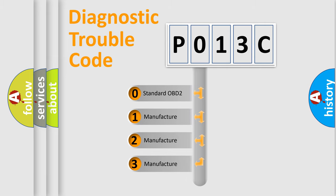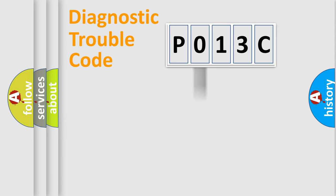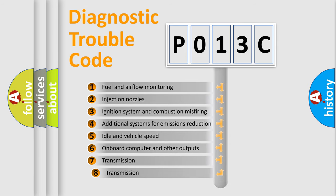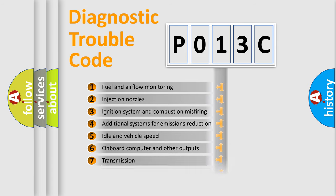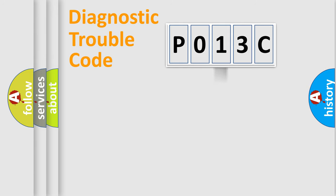If the second character is expressed as zero, it is a standardized error. In the case of numbers 1, 2, 3, it is a more specific expression of the car-specific error. The third character specifies a subset of errors. The distribution shown is valid only for the standardized DTC code.